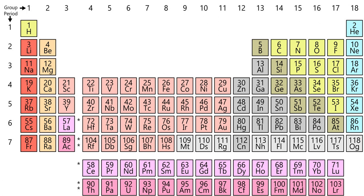The number of compounds formed by nonmetals is vast. The first nine places in a top 20 table of elements most frequently encountered in 8,427,300 compounds, as listed in the Chemical Abstract Service Register for July 1987, were occupied by nonmetals. Hydrogen, carbon, oxygen, and nitrogen were found in the majority of compounds. Silicon, a metalloid, was in 10th place. The highest rated metal, with an occurrence frequency of 2.3%, was iron, in 11th place.